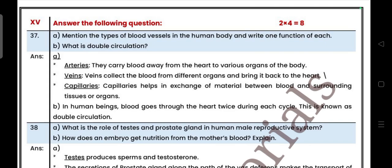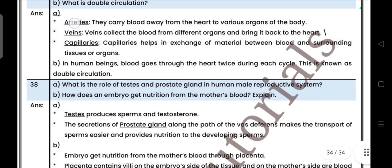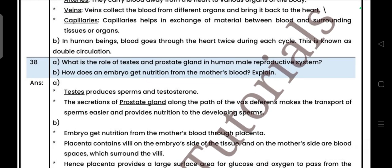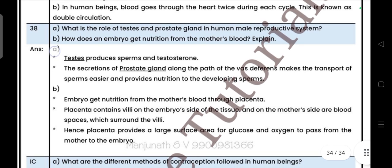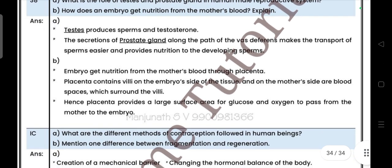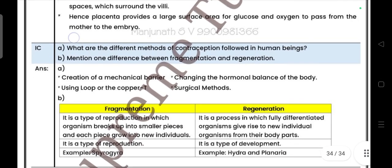Next, four mark question. Mention the types of blood vessels in human body and write one function of each. What is double circulation? Then, what is the role of testes and prostate gland in human male reproductive system? How does an embryo get nutrition from the mother's blood? Explain.